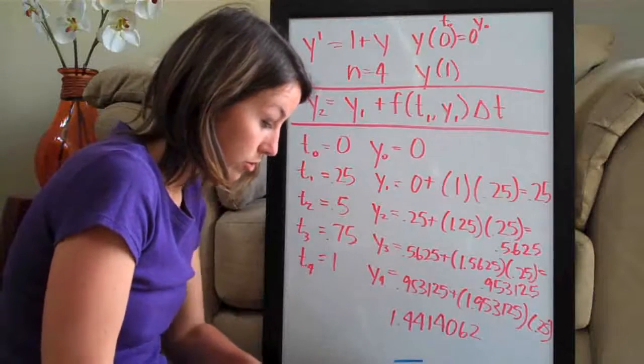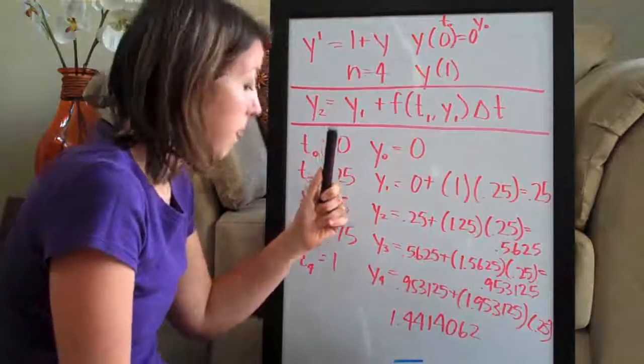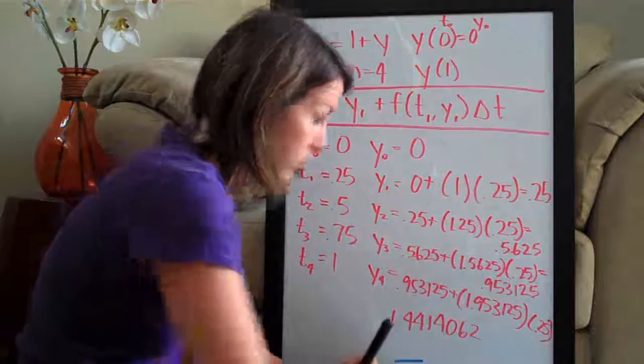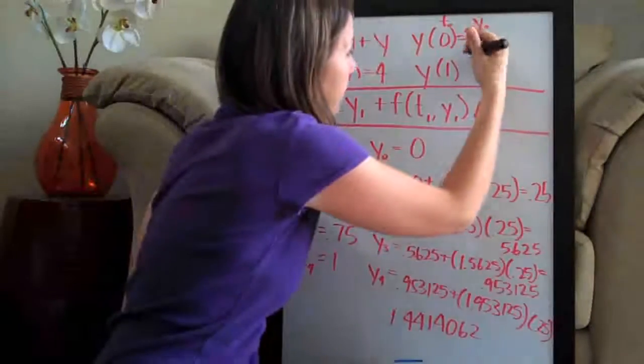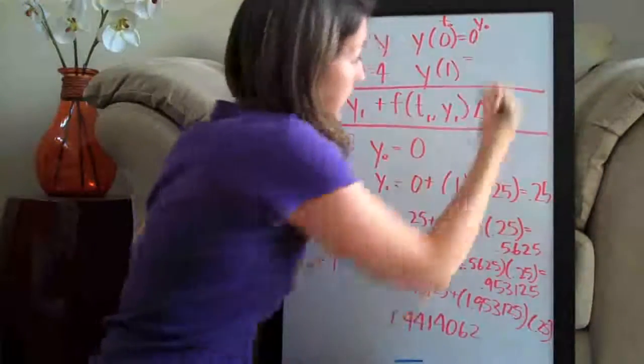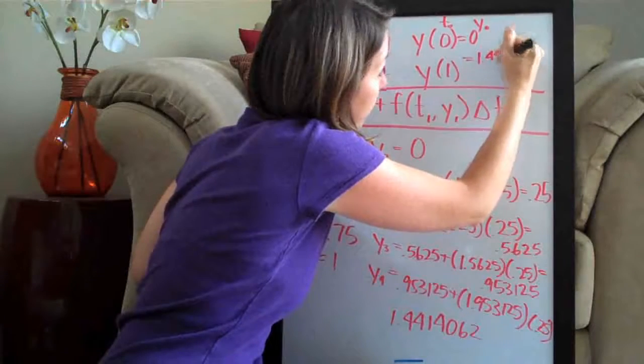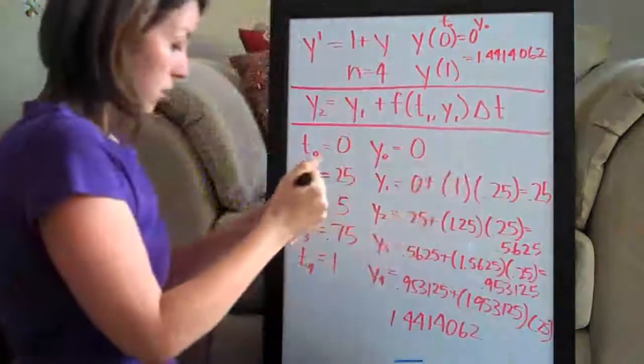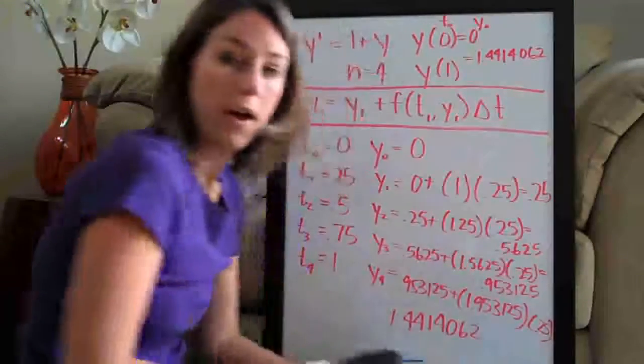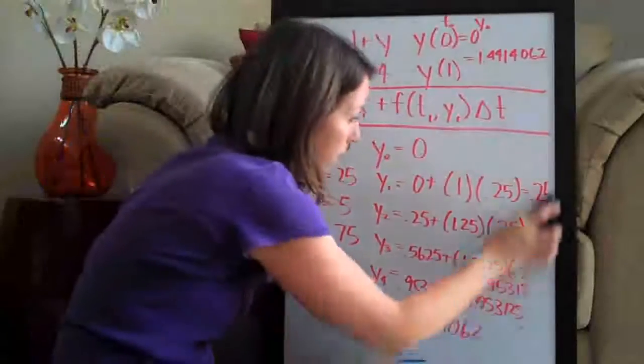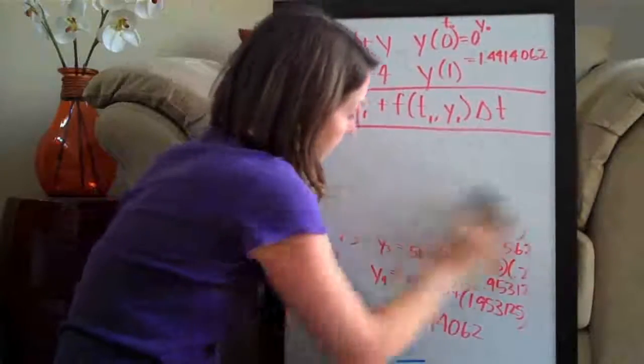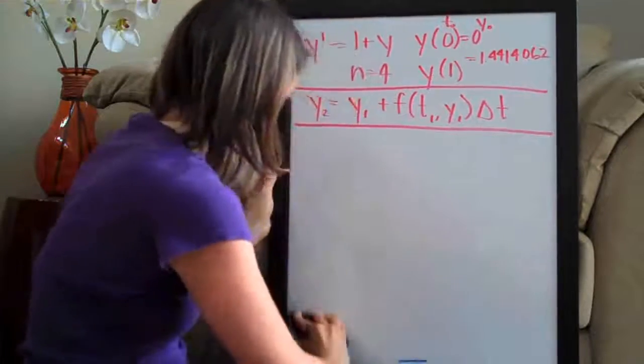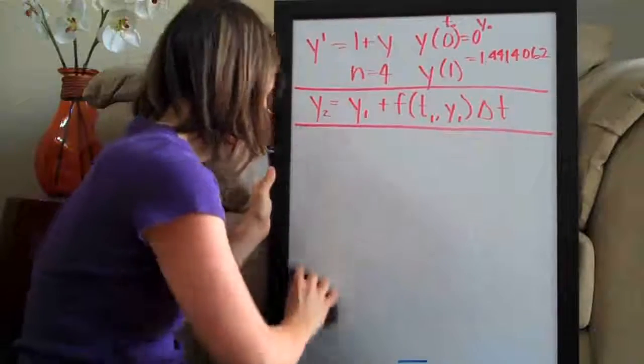Now they also asked us to solve the equation and then plug in 1 for t and get an answer for y. So let's go ahead and write up here the answer that we got, 1.4414062. Okay, so that was our answer using Euler's method. Now we're going to go ahead and solve the equation using calculus and we should get answers that are fairly close.